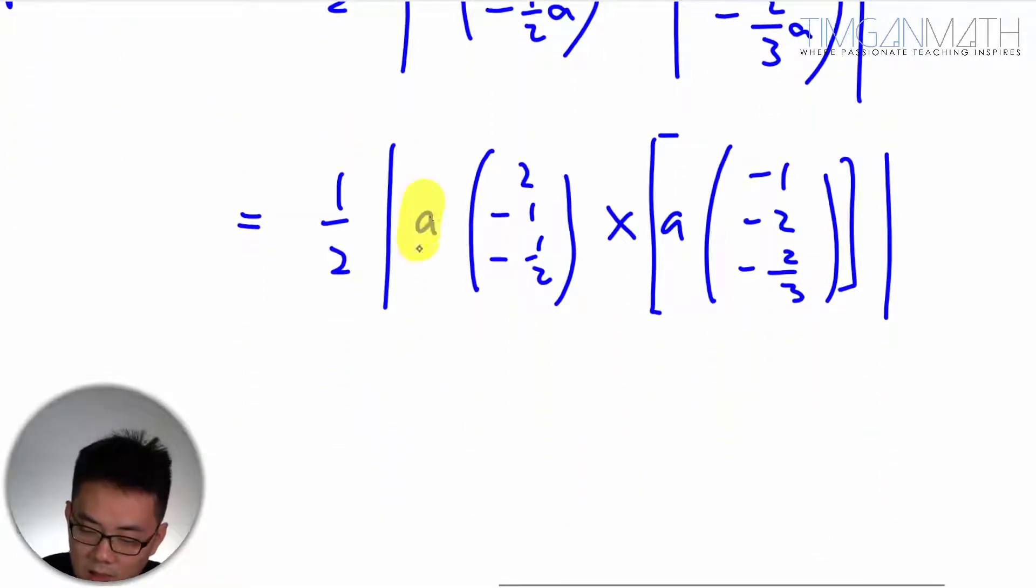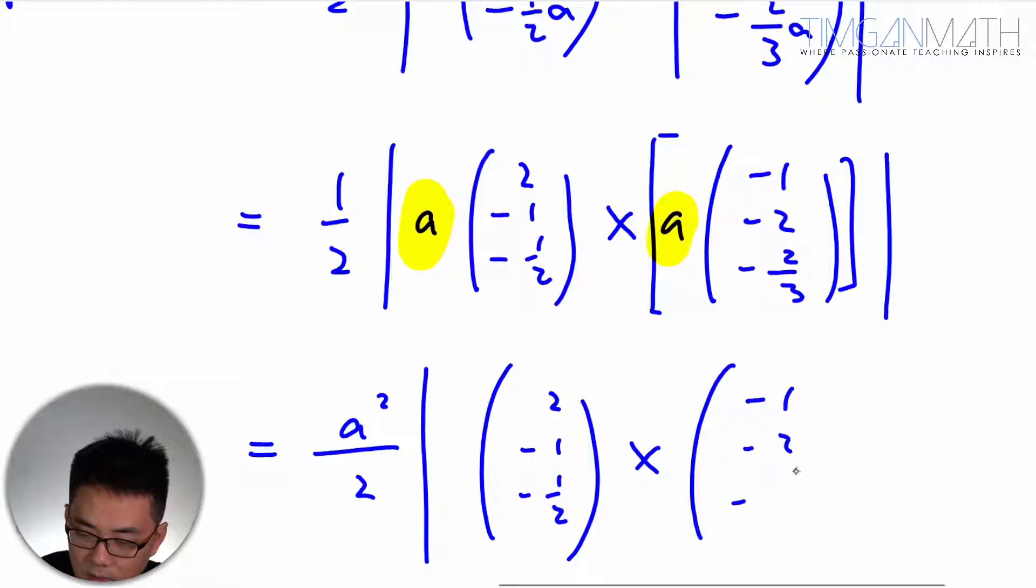So this A and this A are constants. So you can just bring it out. So this is A squared over 2. Ultimately, what is minus 1, minus half cross with minus 1, minus 2, minus 2/3. There you go.